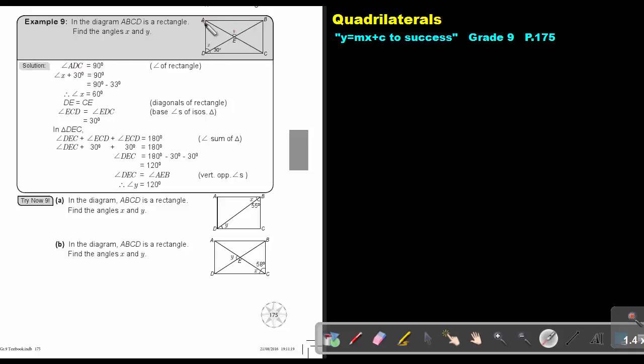Angle ADC, this angle, will be equal to 90 degrees because that's one of the properties of a rectangle. So angle X plus 30 will be 90. I just form an equation. Therefore, angle X will be 90 minus 30. It seems to me there is a printing mistake. So minus 30, but that is correct. And the answer will be 60 degrees.